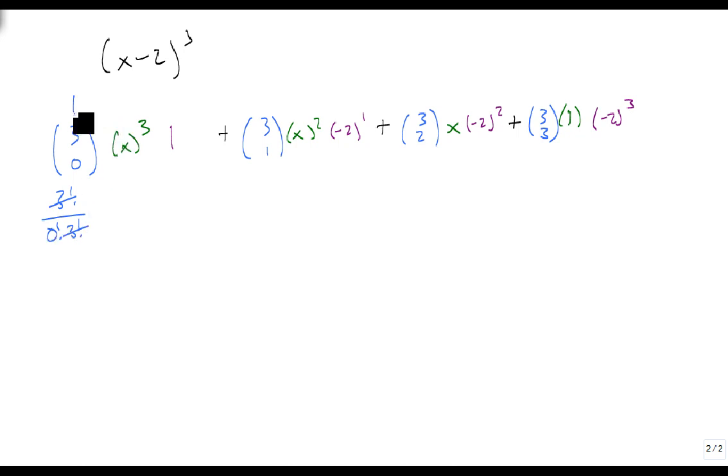This will also be a 1. 3 choose 1 is 3 factorial over 1 factorial times 2 factorial. 3 times 2 factorial over 2 factorial is just 3. So both of these are 3's.